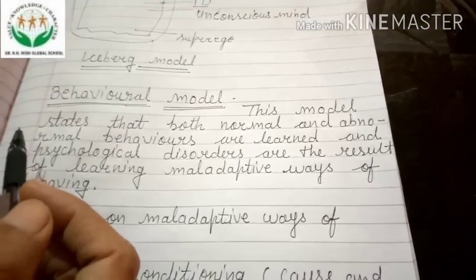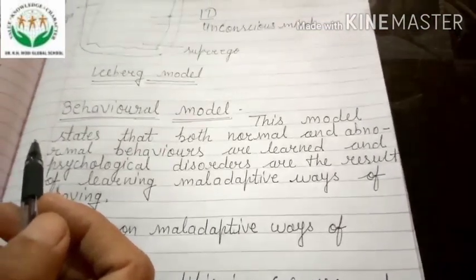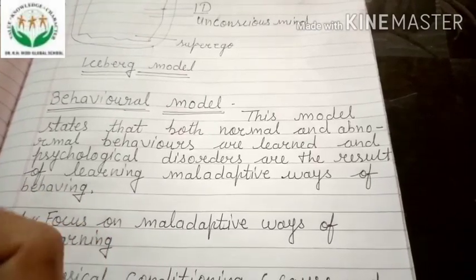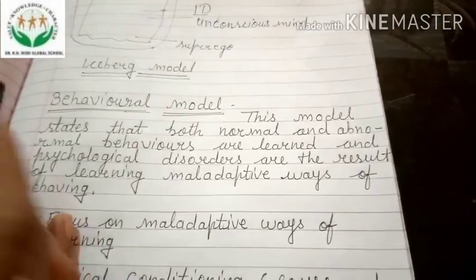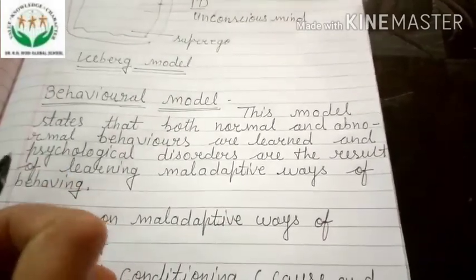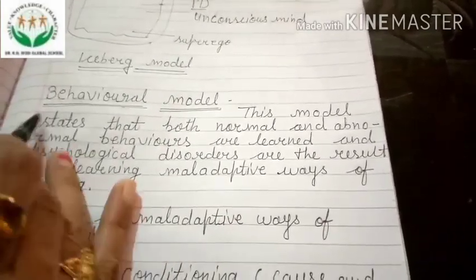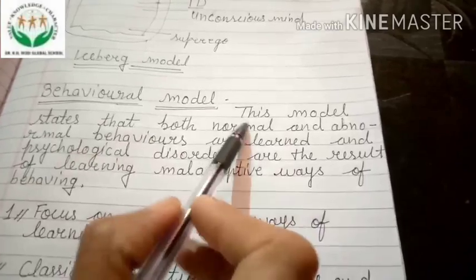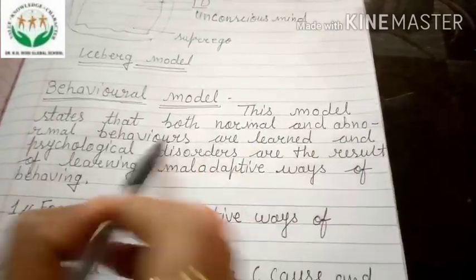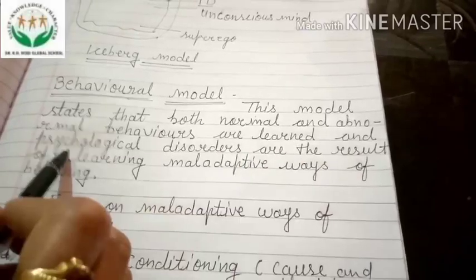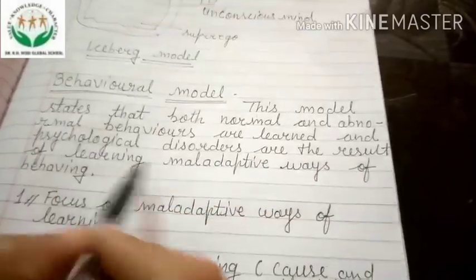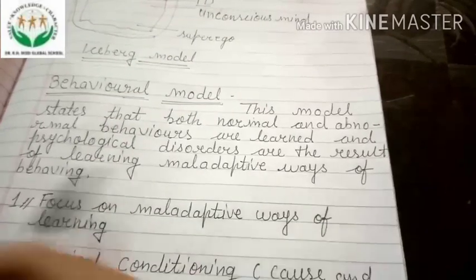Good morning students. In the previous lecture we talked about psychological factors and the psychodynamic model given by Sigmund Freud. Today we will take another model — the Behavioral Model. This model states that both normal and abnormal behaviors are learned, and psychological disorders are the result of learning maladaptive ways of behaving.